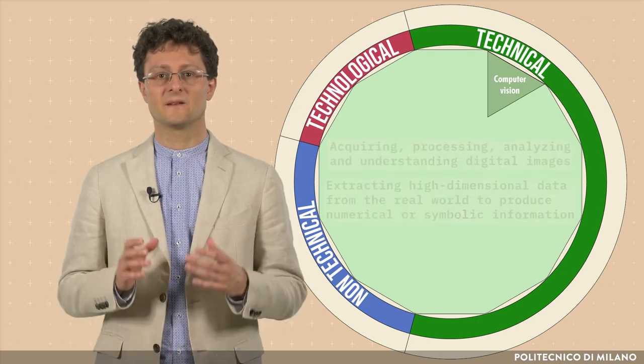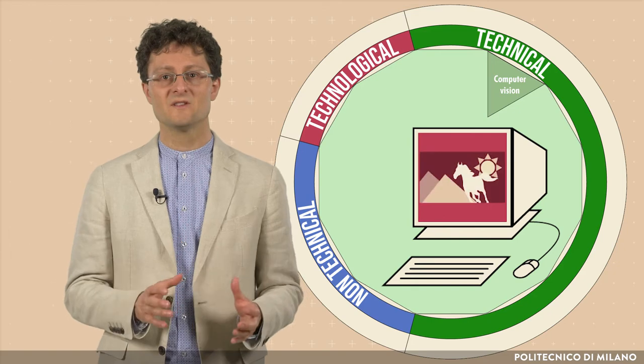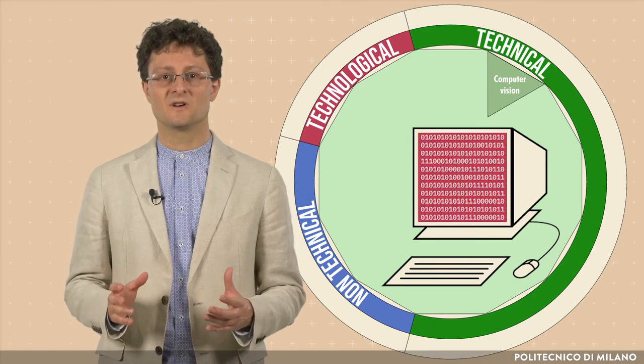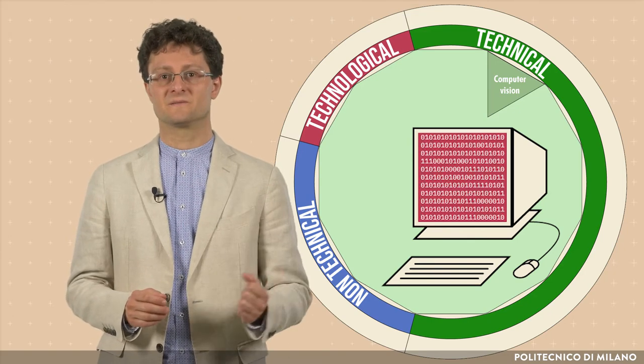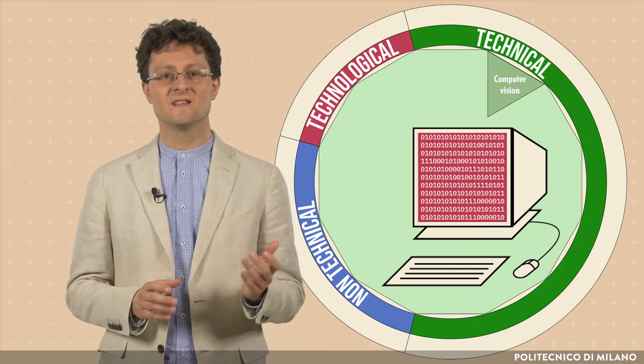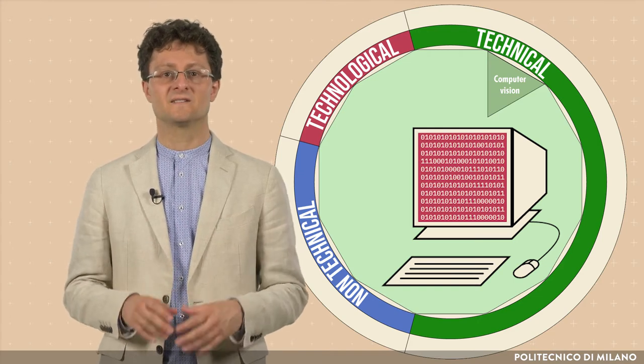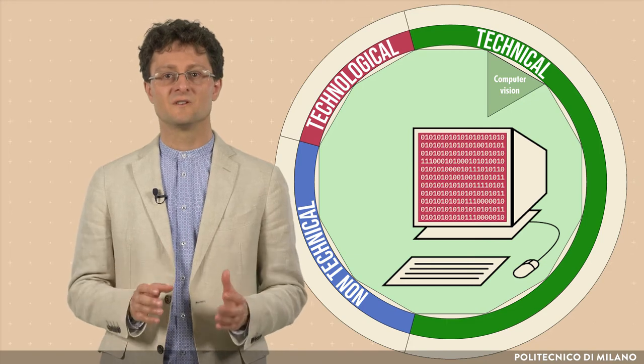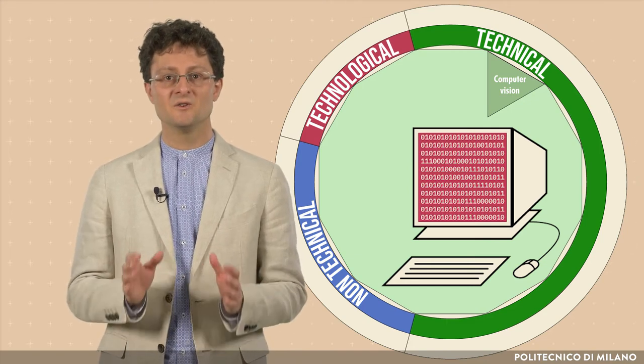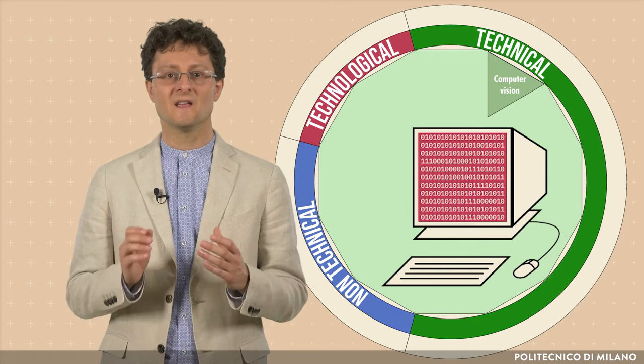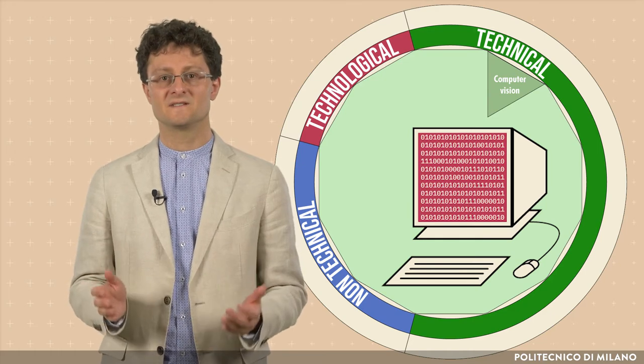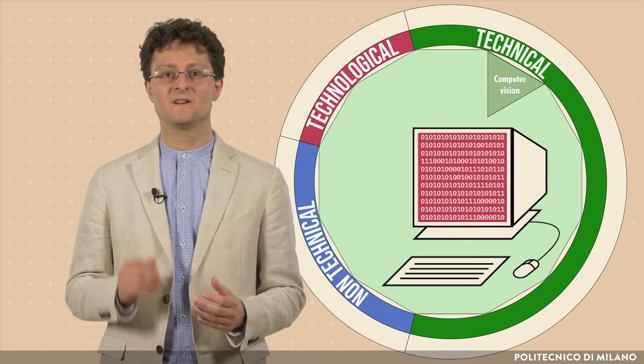In other words, the computer transforms images into an abstract description that can be used by algorithms. This image understanding can be seen as a disentangling of symbolic information from image data, using models constructed with the aid of geometry, physics, statistics, and learning theory.